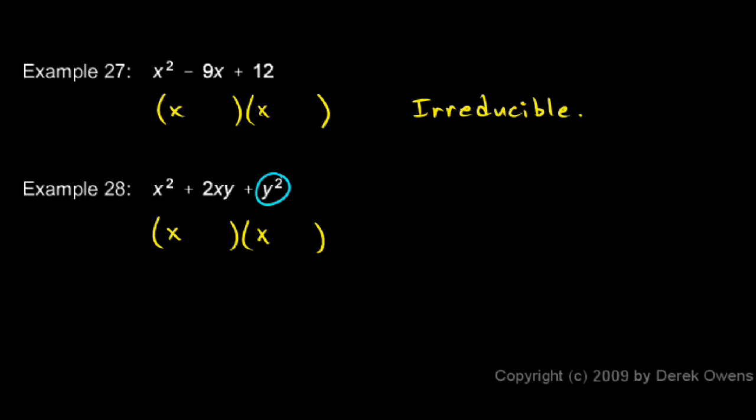And what's going to give us a y squared over here when we do our last, in the first outer inner last? Well, a y will. So let's try this. x plus y times x plus y.